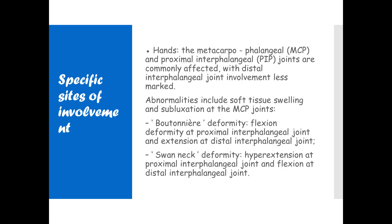In the hands, the metacarpophalangeal joints and proximal interphalangeal joints are commonly affected, with distal interphalangeal joint involvement less marked — remember, in osteoarthritis the distal joints are more commonly affected. Deformities include the boutonniere deformity: flexion at the proximal interphalangeal joint and extension at the distal interphalangeal joint; and the swan-neck deformity: hyperextension at the proximal interphalangeal joint and flexion at the distal interphalangeal joint.